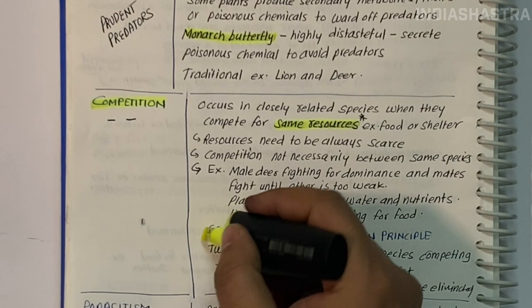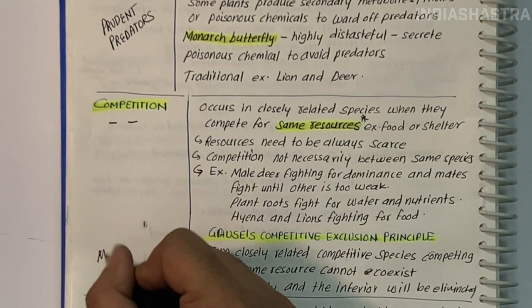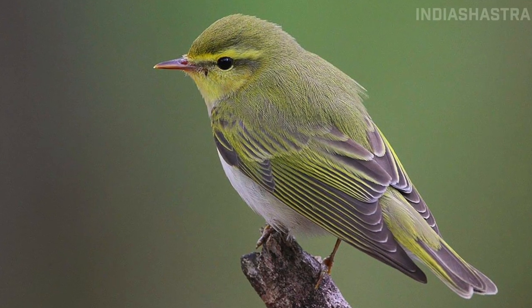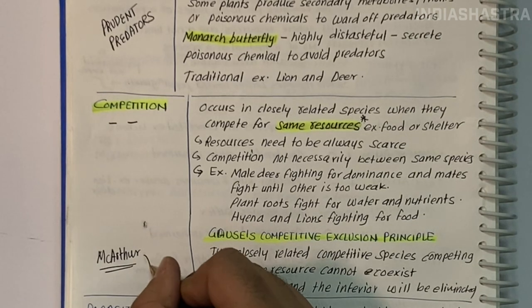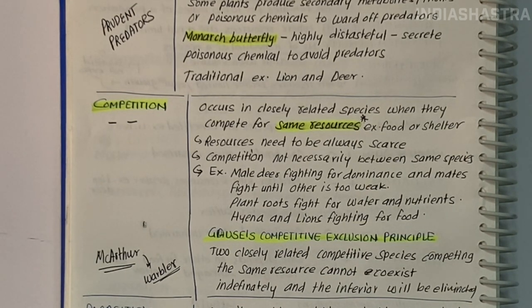Gause's Competitive Exclusion Principle states that two closely related species competing for the same resource cannot coexist indefinitely and the competitively inferior one will be eliminated. One mechanism is resource partitioning. If two species compete for same resource, they could avoid competition by choosing different times for feeding or different foraging patterns.